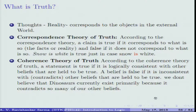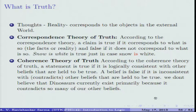There are three theories of truth we commonly use: correspondence, coherence, and pragmatic theory. According to the correspondence theory, a claim is true if it corresponds to what it is — if it refers to some facts or reality in the world. If it is not referring to the facts of the matter or reality that exists in the world, the sentence is false.